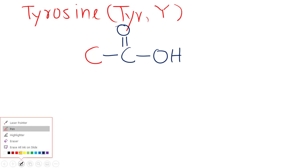Its three-letter symbol is tyr and single-letter symbol is y. So this is the alpha carbon. And to alpha carbon we have carboxylic group. And to the third position or second position of alpha carbon we have hydrogen atom and amino group.